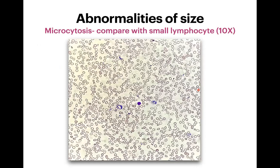This image taken at 10x shows a large number of RBCs for assessment. Here I searched for the smallest lymphocyte. Compare the nucleus size of this lymphocyte with the surrounding RBCs — all of them are microcytic. This is a case of microcytic hypochromic anemia due to iron deficiency. The key technique: focus at 10x, find the smallest lymphocyte, then compare the RBC sizes.